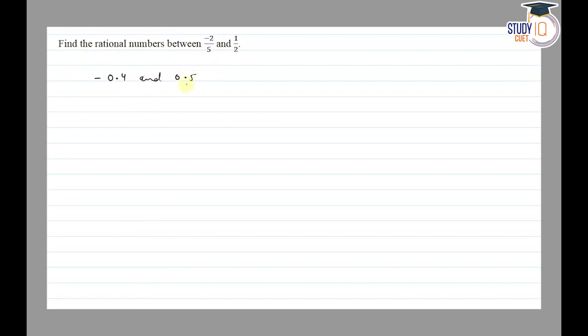So we have to find the rational numbers between these two. The numbers are -0.3, -0.2, -0.1, 0.1, 0.2, 0.3, 0.4, and then 0.5.